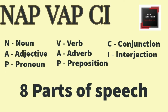The eight parts of speech can be remembered with the acronym NVACIPI: N refers to noun, the naming word. A refers to adjective, the describing word for noun. P refers to pronoun, the replacing word for noun. V refers to verb, the action word. A refers to adverb, the describing word for verb. P refers to preposition, the locating word. C refers to conjunction, the connecting word. I refers to interjection, the expressing word.